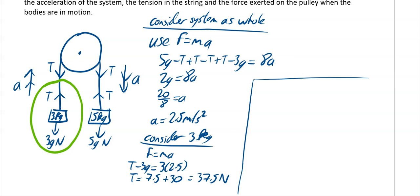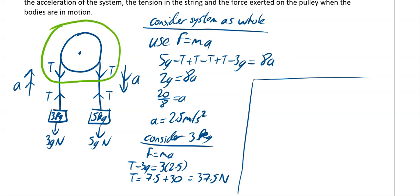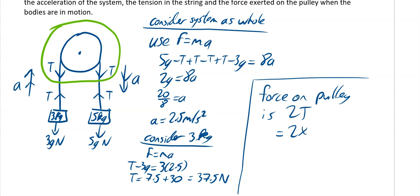The last thing is the force exerted on the pulley. Looking just at the pulley, there are two tension forces acting on it. So the force on the pulley is 2T, which equals 2 times 37.5, giving 75 Newtons. So we have the acceleration, the tension, and the force on the pulley.